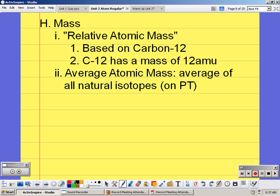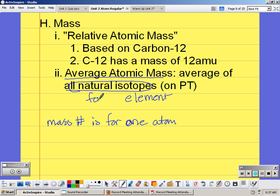The mass number refers to one specific isotope, but the average atomic mass refers to all natural isotopes. So mass number is for one atom, but the average atomic mass, because it's all the natural isotopes, is for the element. And it's the one that's listed on the periodic table.